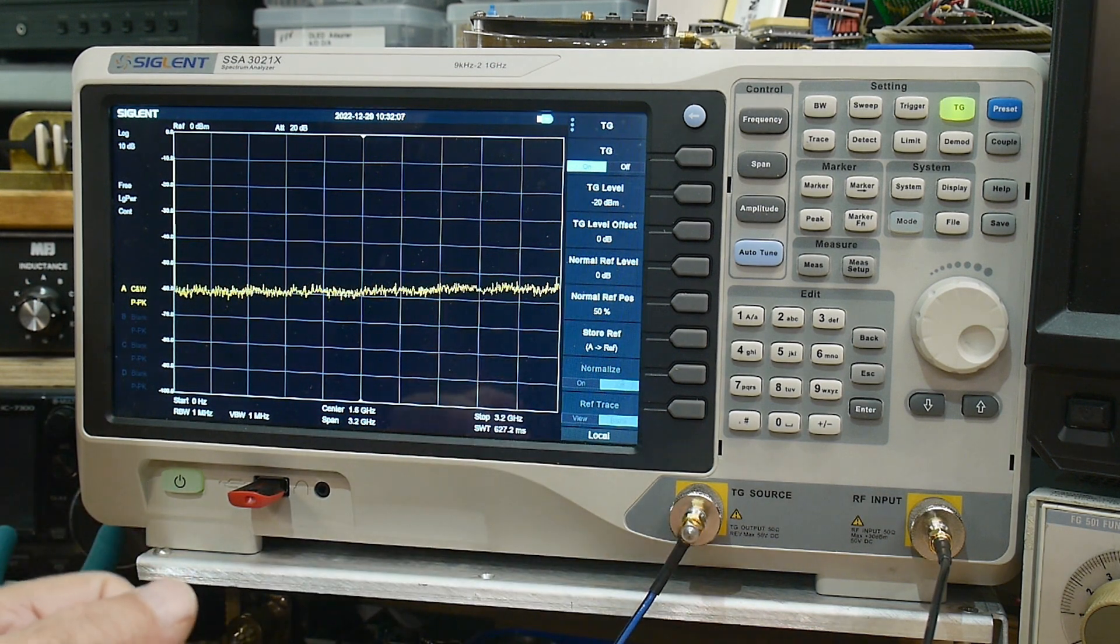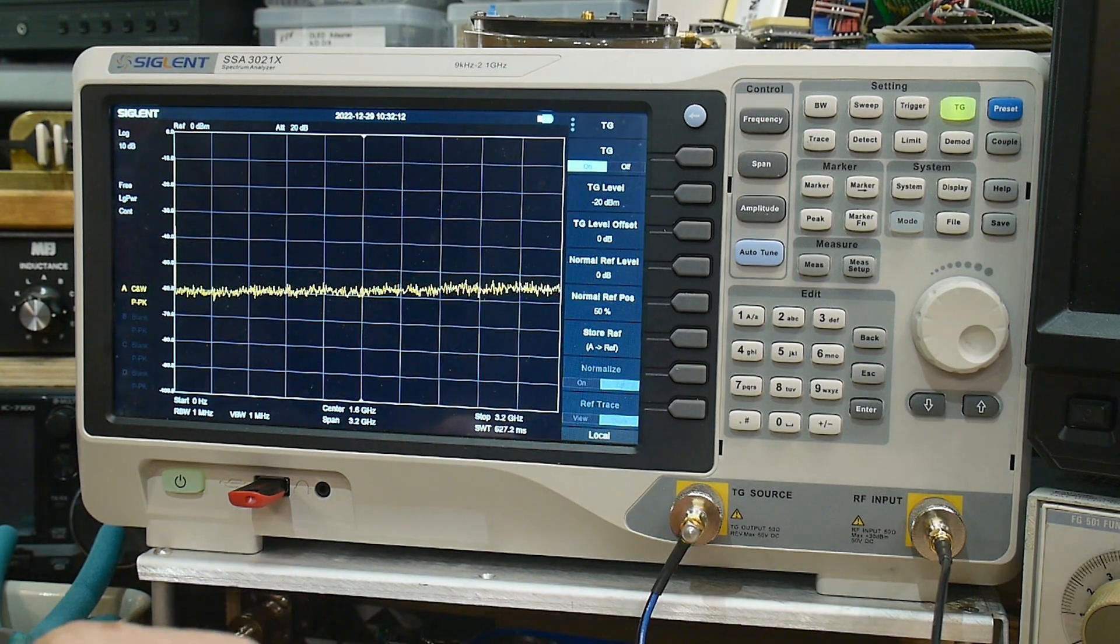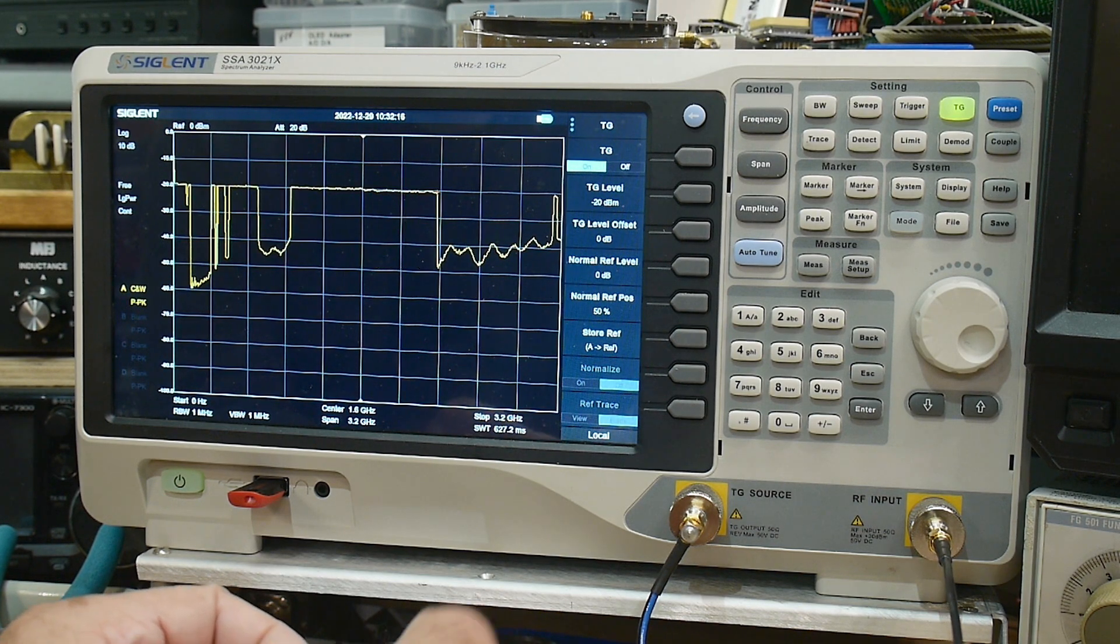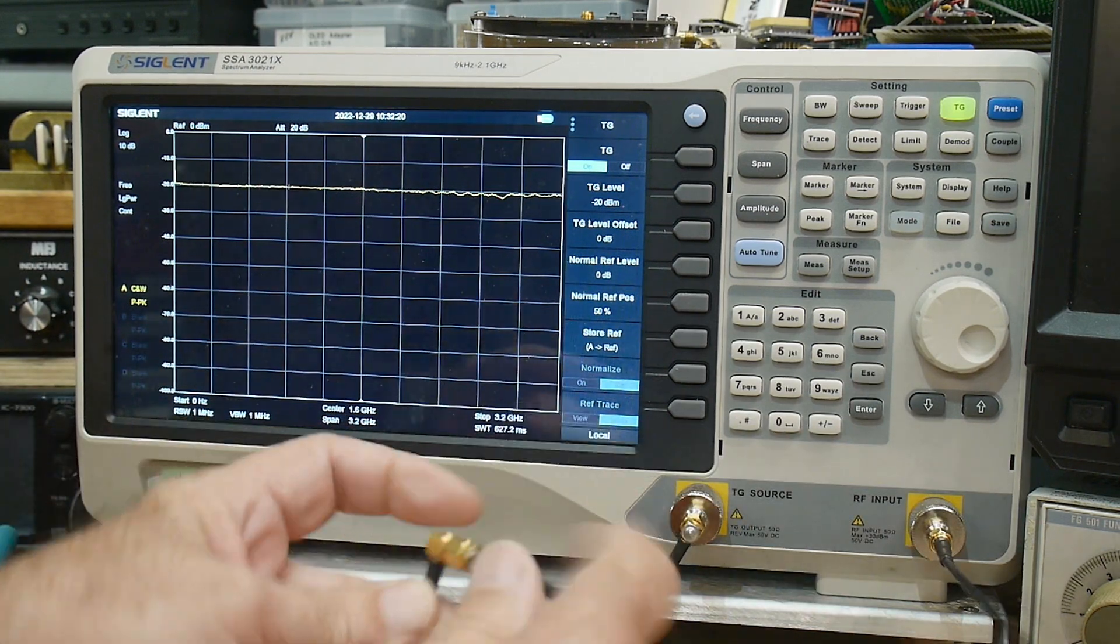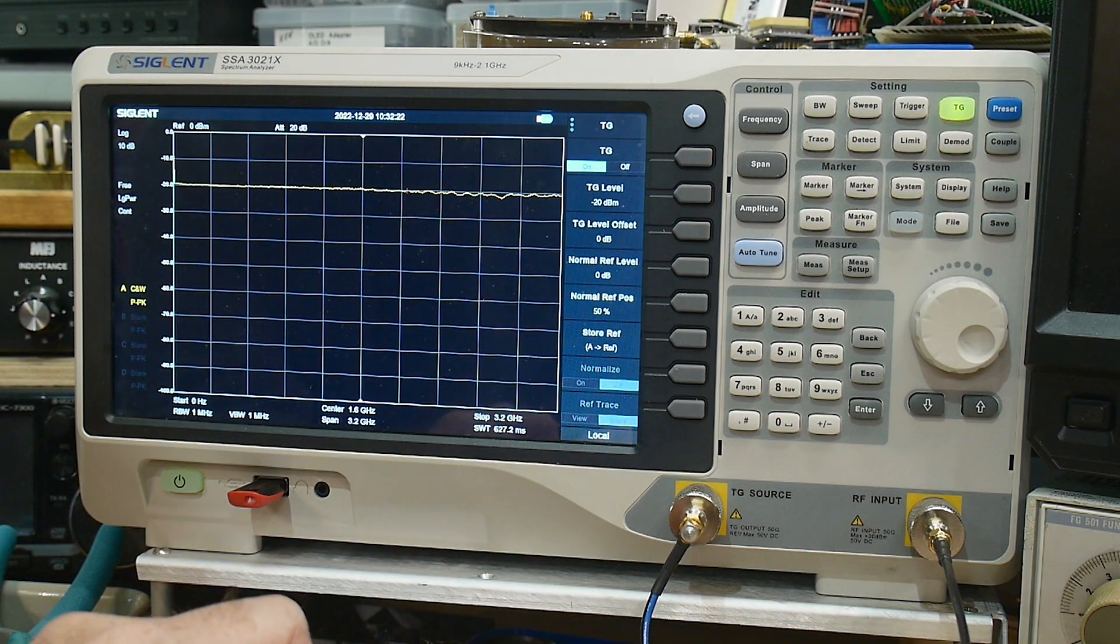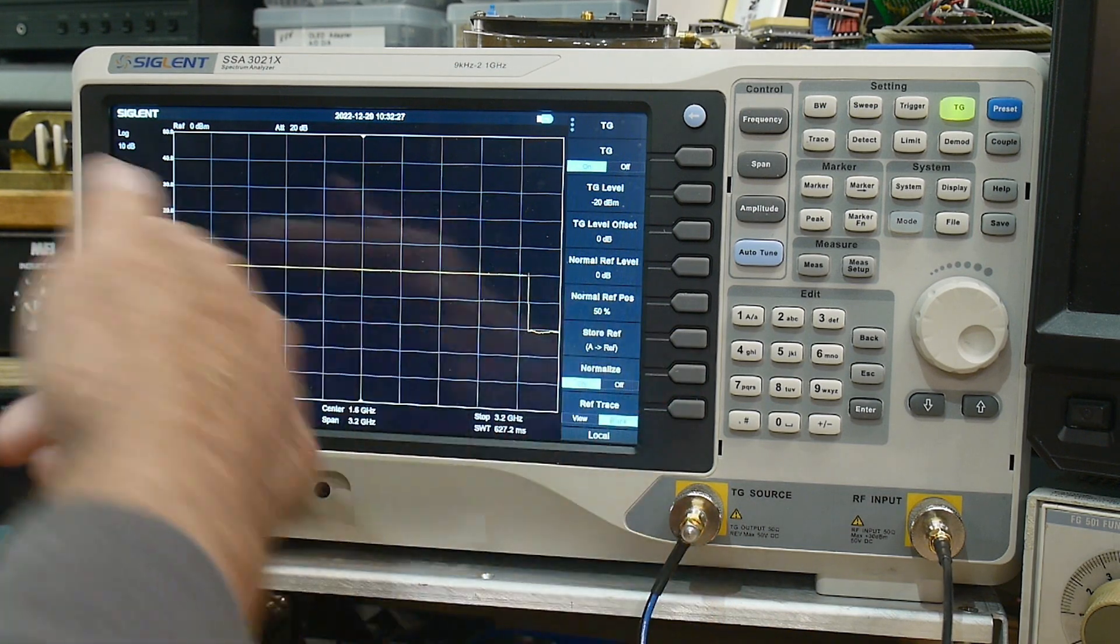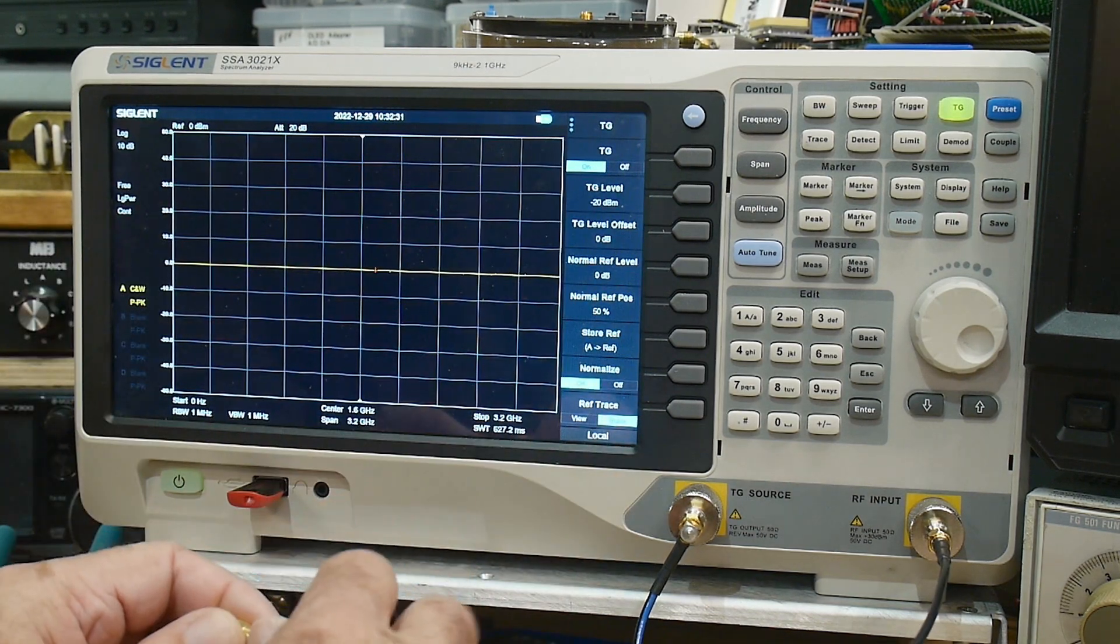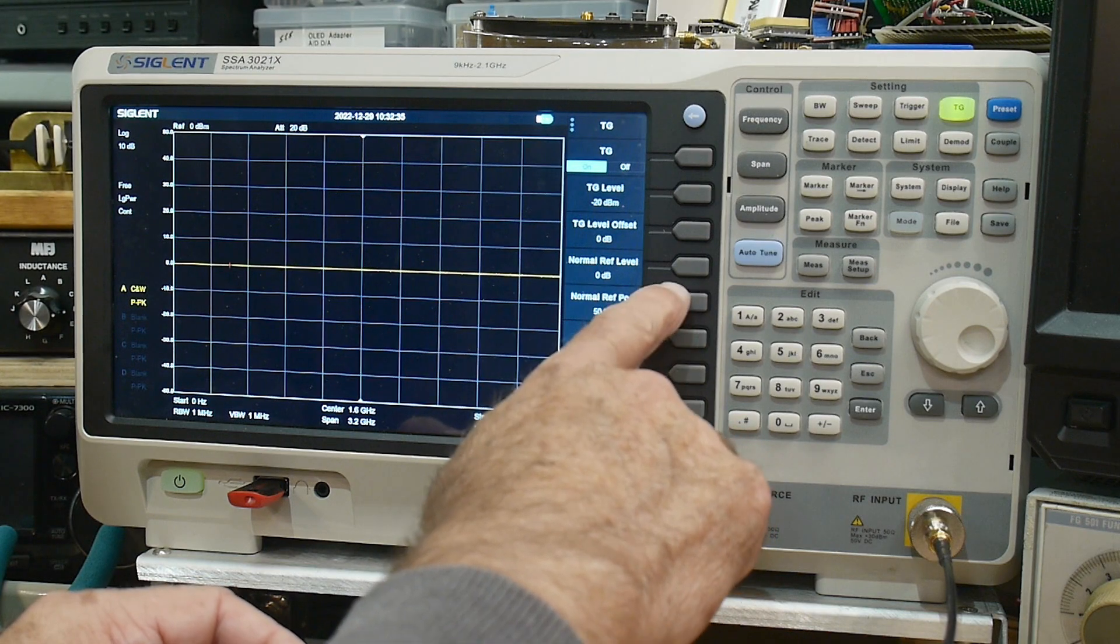All right, we're gonna be using the tracking generator, so we'll turn that on and we should do a cal. I'm gonna put a through connector here to put the input and output together. We have a line, it's pretty flat already but we'll go ahead and store that reference and normalize it. So now it's a perfectly flat zero dB line.